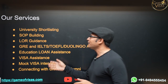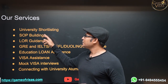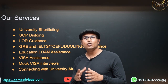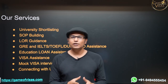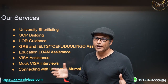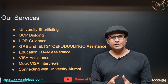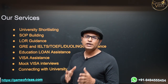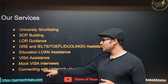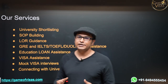Services provided include university shortlisting based on your profile, statement of purpose writing, LOR guidance, GRE and English test assistance, and education loan assistance — no collateral required. Universities range from 10 lakh to 50 lakh fee options, and you can pay off the education loan within one year of getting a job. Visa assistance, mock visa interviews, and university alumni connections are also offered, with a 99% visa success rate.